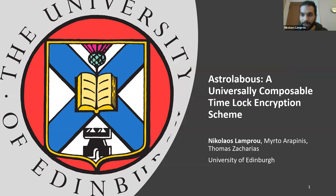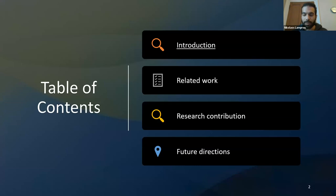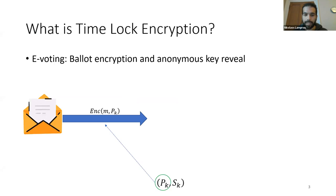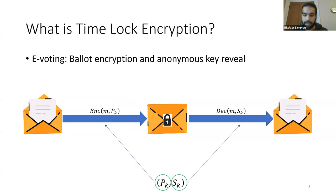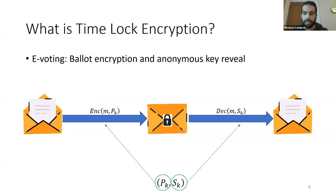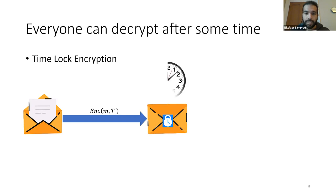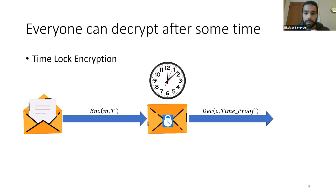Hello everyone, my name is Nicola and today I'm going to speak to you about Astrolabos, a universally composable time-lock encryption scheme. This work is a collaboration with Myrto Arapinis and Thomas Zacharias. First, I'll give a brief introduction to time-lock encryption. Consider the case of voting where a voter encrypts a vote using an encryption algorithm and a public key. If the secret key is not revealed, we have fairness issues. With time-lock encryption, we use a time parameter t instead of a public key, and after time t has been reached, everyone can use the decryption algorithm with a time-proof to retrieve the initial message.